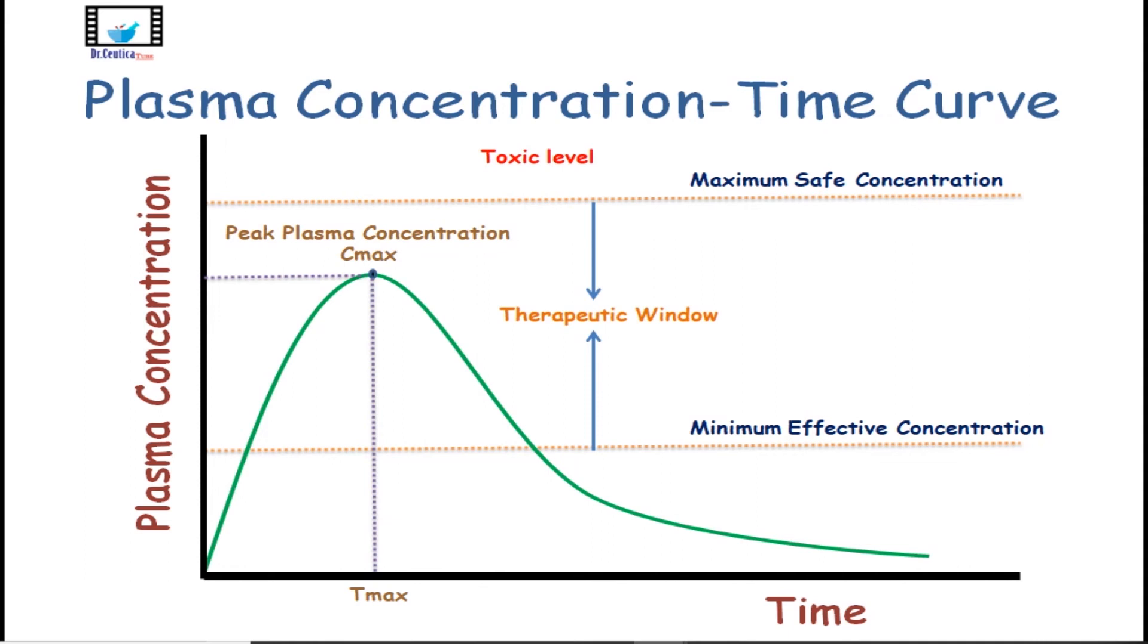The second on this list is the onset, which is the time needed to reach the minimum effective plasma concentration after taking the medication. It's when the drug starts acting. And the time period throughout which the drug is still acting is called the duration. As long as the concentration is above the minimum effective concentration, the drug will still be acting. That's why we can define duration as the time period during which the plasma concentration is above the minimum effective concentration.